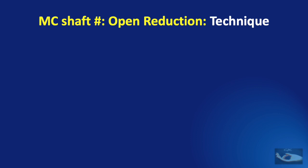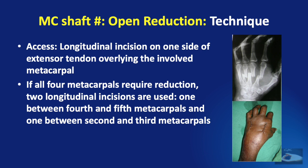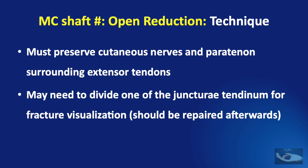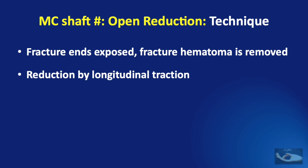The method of open reduction entails the following. A longitudinal incision is made on the dorsum of the hand on one side of the extensor tendon overlying the involved metacarpal. If all four metacarpals require reduction, two longitudinal incisions are used — one between the 4th and 5th metacarpals and one between the 2nd and 3rd. Care must be taken to preserve the cutaneous nerves and the paratenon surrounding the extensor tendons. A junctura tendon may need to be divided for fracture visualization and should be repaired after fixation. The fracture ends are exposed, hematoma removed, and reduction achieved by longitudinal traction.